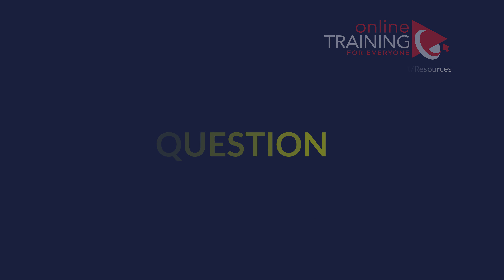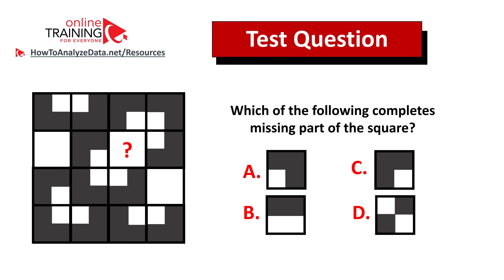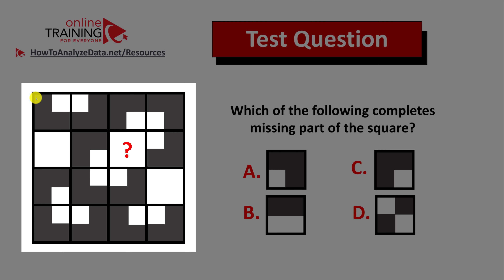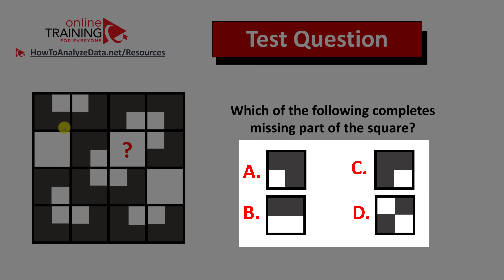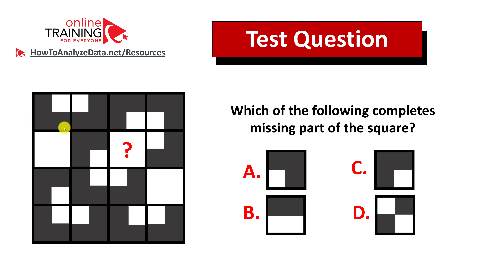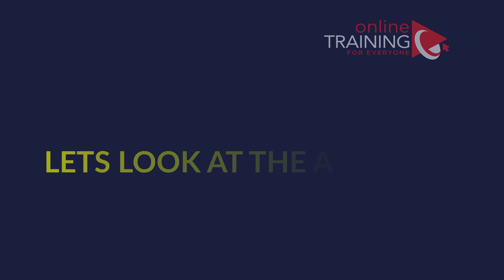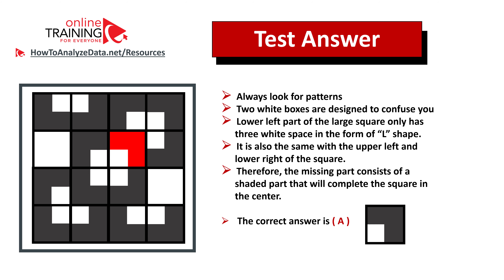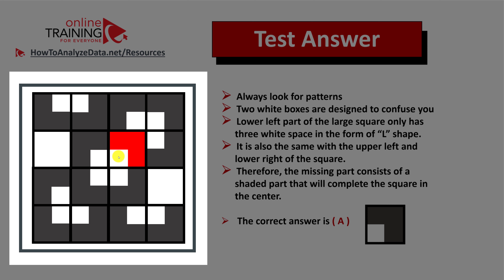Here's a tricky question testing pattern recognition and visual reasoning skills: which of the following completes the missing parts of the square? You're presented with a four by four square containing different smaller squares inside, and four possible choices — A, B, C, and D. Pause the video and give yourself 10 to 20 seconds. As usual, look for patterns.